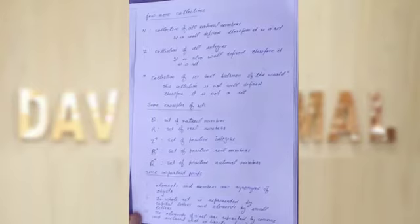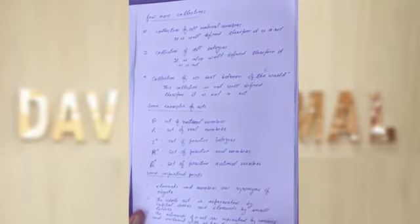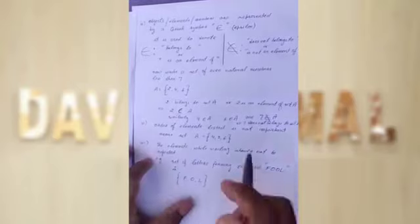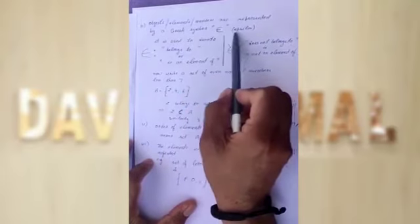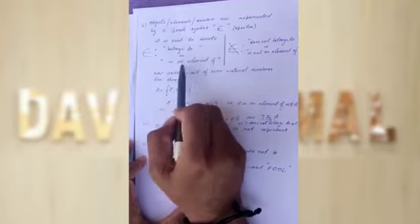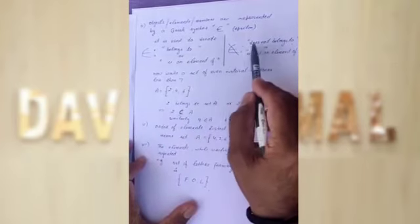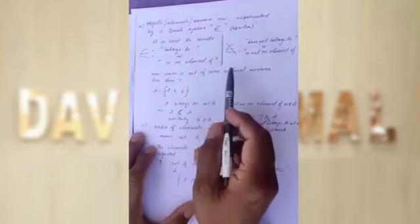Elements are enclosed within curly brackets only — no other brackets are acceptable. Objects, elements, or members are represented by the Greek symbol epsilon (∈), which we use to mean 'belongs to' or 'is an element of.' If we write the negated symbol (∉), it means 'does not belong to' or 'is not an element of.'